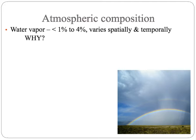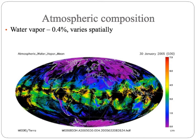Water vapor is another really important component of the atmosphere. It varies from less than 1% to 4% of the atmosphere, varying spatially and temporally over space and time. This figure gives an idea of why: the purple at the poles shows areas with essentially no water vapor, and as you move towards the warmer equator, you end up with more like 4% or 5% of the atmosphere being water vapor. So as the air gets warmer, you get more water in the atmosphere.